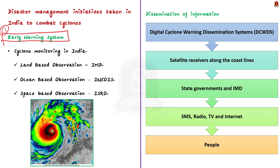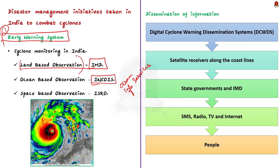In India, the cyclone early warning system is aided by three organizations: the Indian Meteorological Department, IMD, which has various land-based observatories; the Indian National Center for Ocean Information Services, INCOIS, which has a number of ocean-based observatories; and finally, ISRO, which has a network of weather satellites to monitor cyclogenesis.